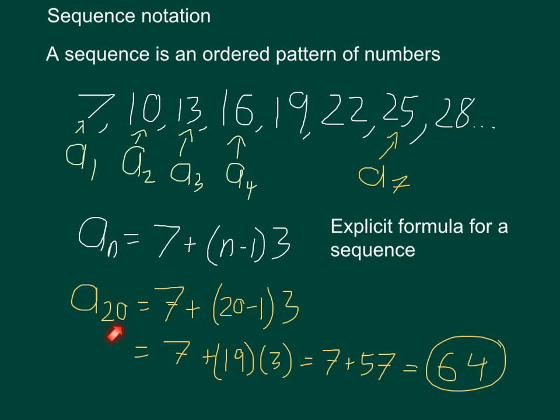So in this case, finding the 20th element, that's saying, well what is A20? What is the 20th element? So I put 20 into my formula, and I follow order of operations to solve. 20 minus 1 is 19, then I do 19 times 3, and add 7 to the result, and I get 64.